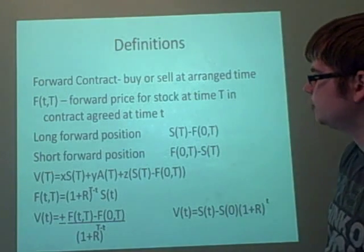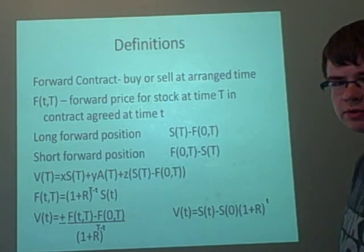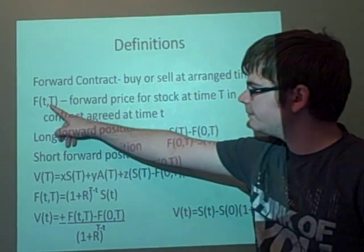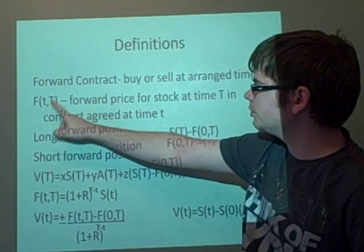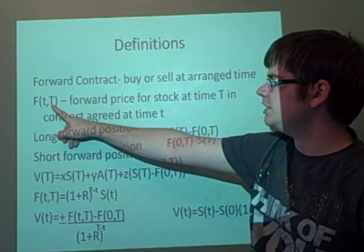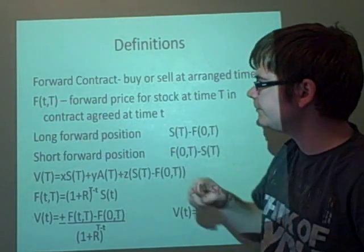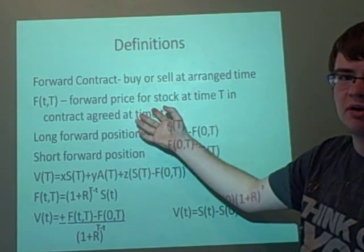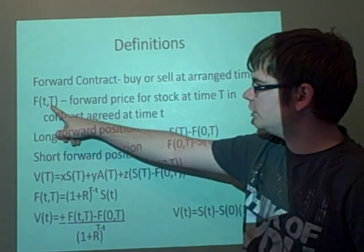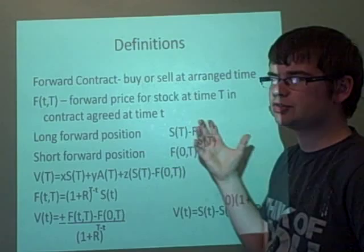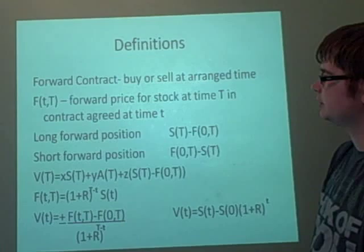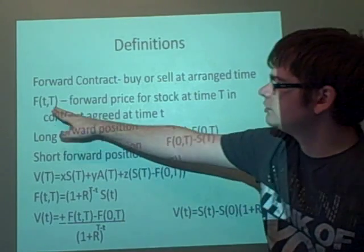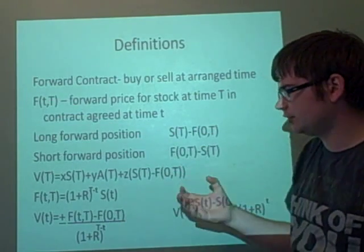First, Forward Contract. This is where you agree to buy or sell something at a specified time, which we're calling Big T. We denote a Forward Contract by F, with little t and Big T. Big T is when we've arranged to either buy or sell it, and little t is when we set up the contract. So that's why they're different - this one could be like a year along the line.